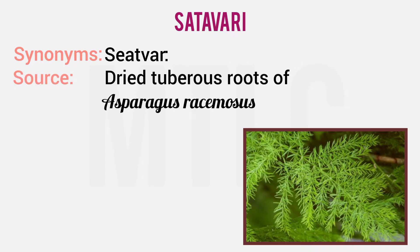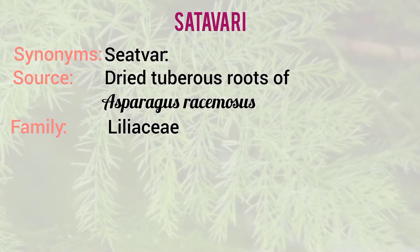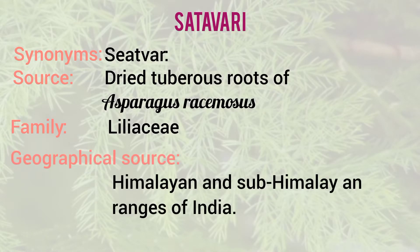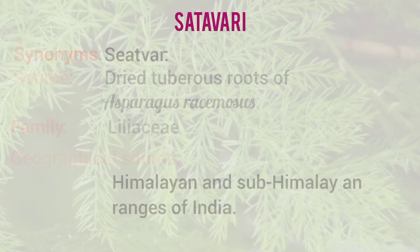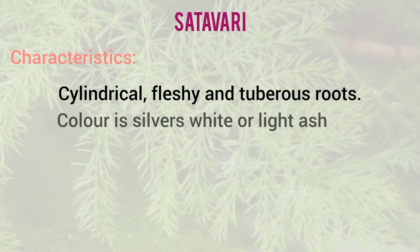It is a dried tuberous root from Asparagus racemosus, family Liliaceae. The geographical source is the Himalayan Range and Sub-Himalayan Ranges of India. The roots are cylindrical in shape.